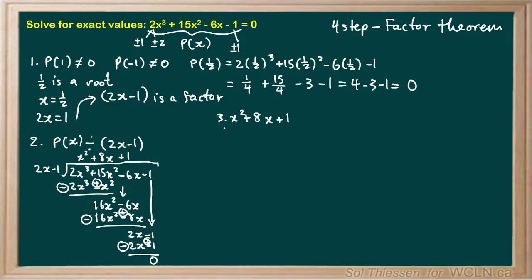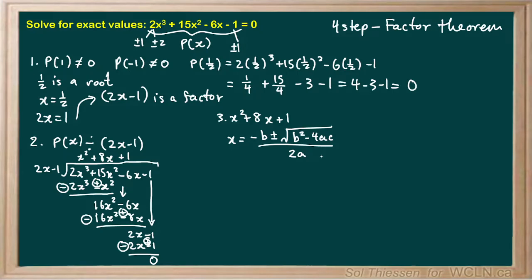Now in step 4 we need to factor this quadratic, but there's a catch — it's actually not factorable. Can you think of two numbers that multiply to 1 and add to 8? Probably not. So in order to solve for the values of x that set this factor to 0, we actually have to apply the quadratic formula, and that's why we say we are solving for exact values. The quadratic formula is x equals negative b plus or minus the square root of b² minus 4ac, all over 2a, where a is the coefficient on x², b is the coefficient on x, and c is the constant term.